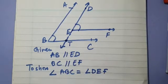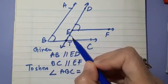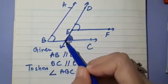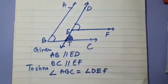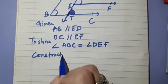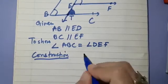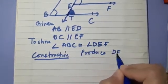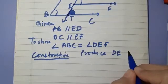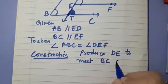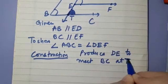You can see that a new angle is coming up. I am marking this angle ETC. So we are going to write down construction: produce DE to meet BC at T.